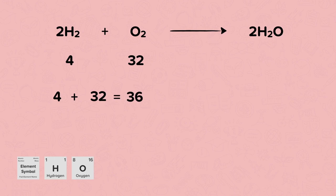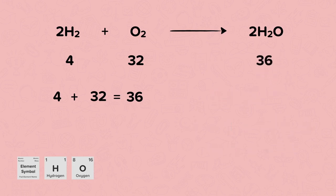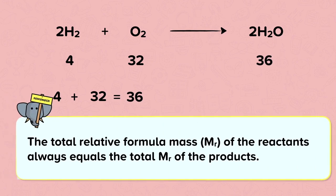Now we can calculate the mass after the reaction. In water there are two hydrogen atoms, each with an atomic mass of 1, and one oxygen atom with an atomic mass of 16. So the relative formula mass is 1 plus 1 plus 16, which is 18. But we have two water molecules on this side of the reaction, so we need to times that 18 by 2, and that gives us 36. The mass before the reaction is 36 and the mass after is 36. The total relative formula mass of the reactants always equals the total relative formula mass of the product.